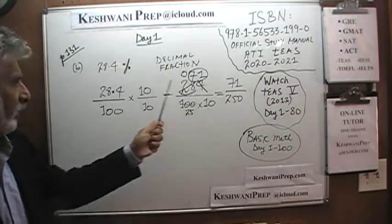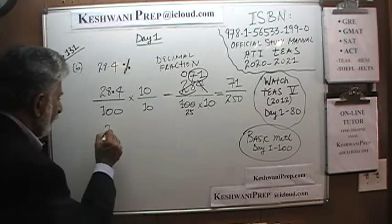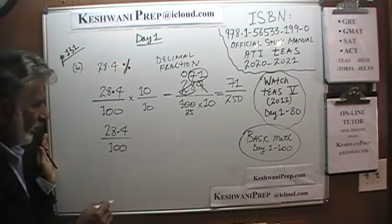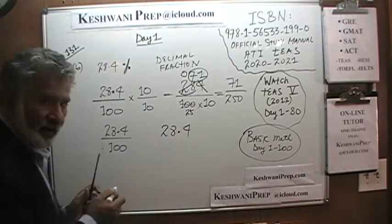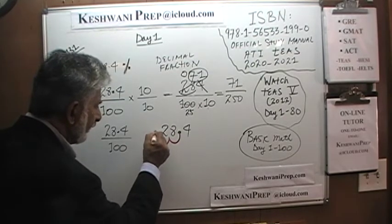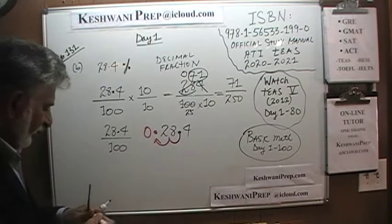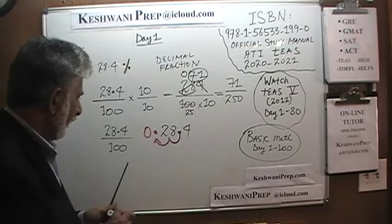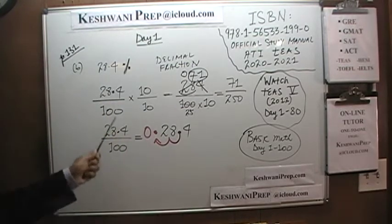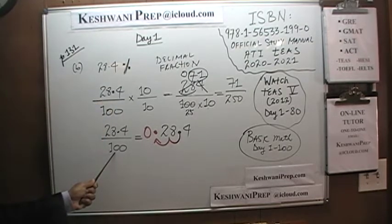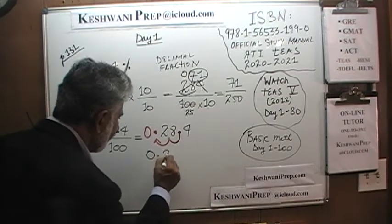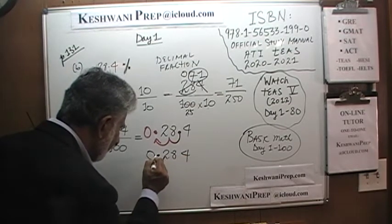Now converting 28.4% to decimal: 28.4 over 100 means we pick up the decimal in 28.4 and move it two spots to the left — 1, 2 — and put a 0 in front. So 28.4% in decimal form is 0.284.